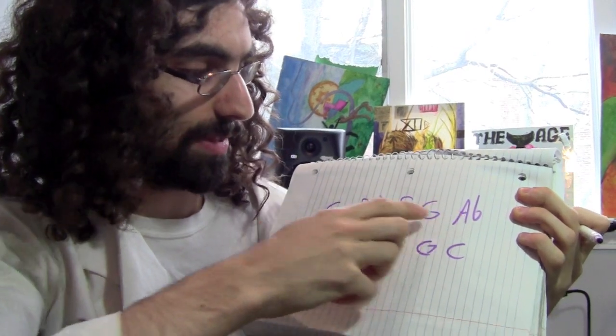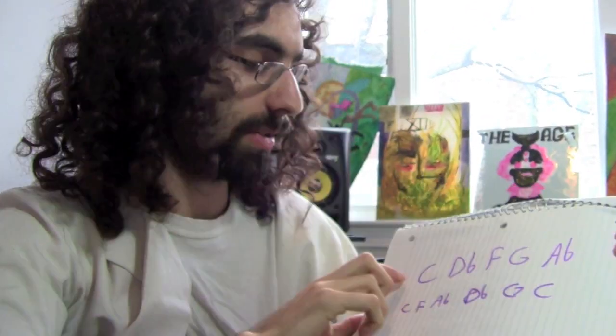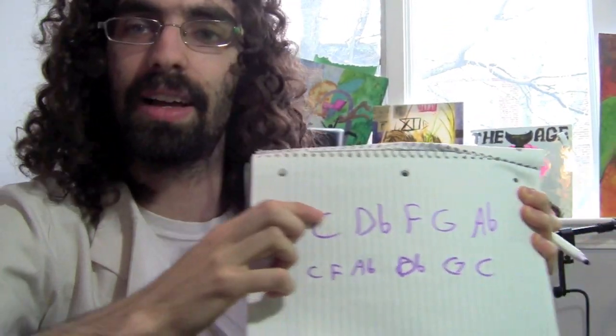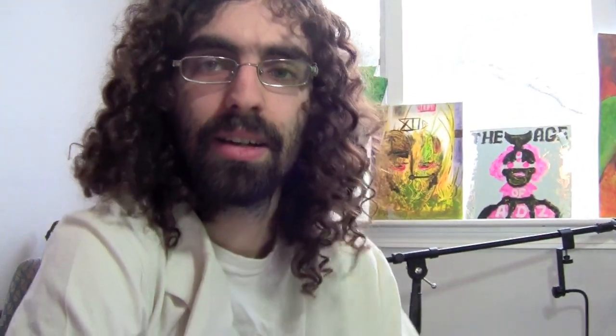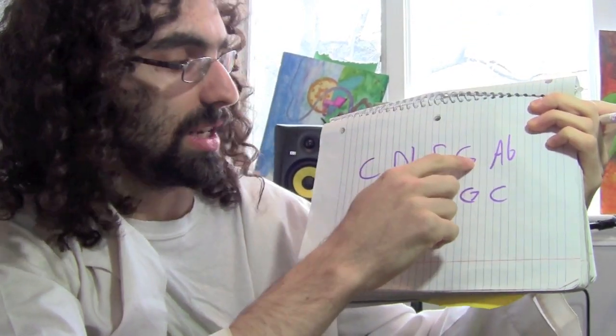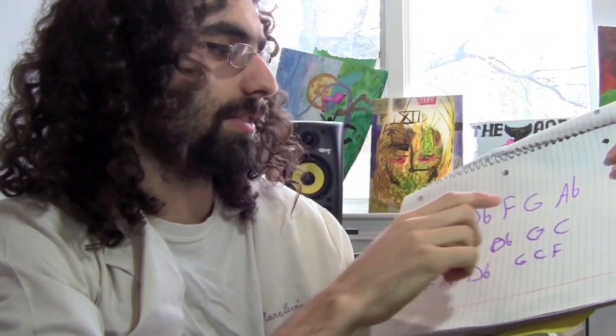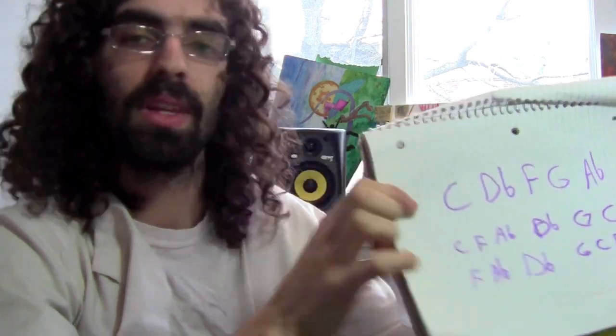Next we'll do F — actually, F, A-flat, D-flat, because we have to skip every other one. F, A-flat, D-flat. Then G, C, F. And then finally we'll have A-flat, skip to D-flat, then G. A-flat, D-flat, G. So we've got five triads now, five three-note chords.